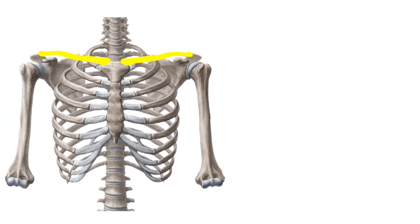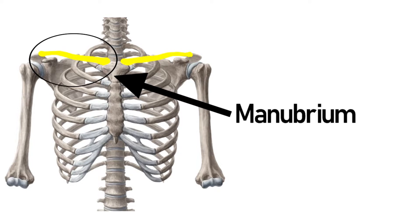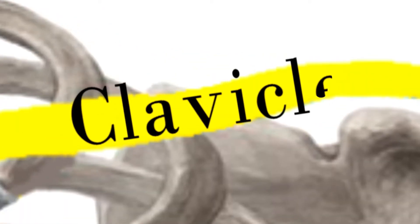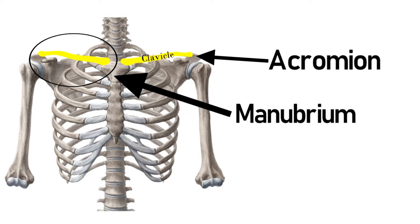Let's have a look. As you can see, these bones shaded in yellow are the clavicles. This is the manubrium of the sternum, and this is the acromion of the scapula. This is the clavicle that extends from the manubrium to the acromion.